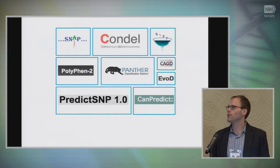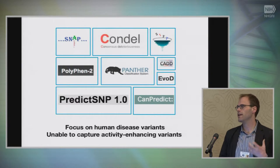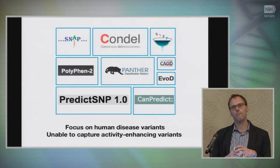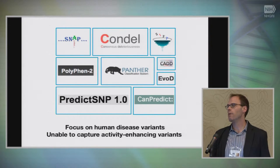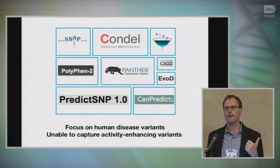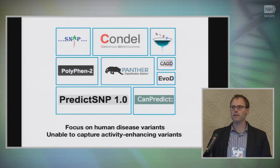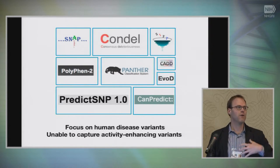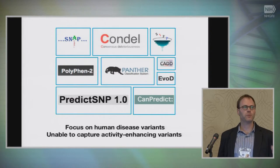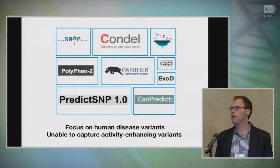We wanted to move in two useful directions. One is that many existing predictors either explicitly or implicitly seek to predict the effect of a variant on a human phenotype. We thought a more narrowly scoped task — namely predicting the effect of a variant on a protein's function — might be something we could be more successful with, and would leverage what we're learning from projects like XAC and genome-wide knockouts in model systems about what happens when we lose function in a particular protein. Also, nobody really knows what to do with activity-enhancing variants, and we thought we might be able to make some headway there.